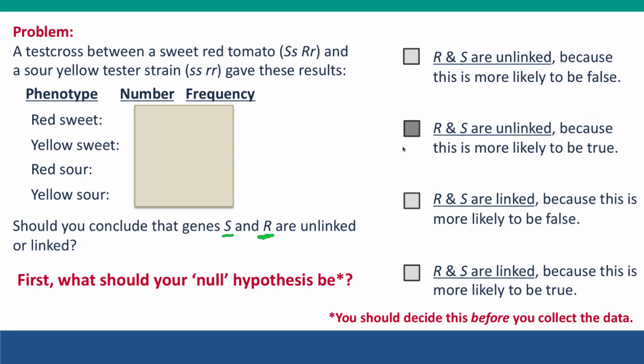The answer is that your null hypothesis should be that the two genes are unlinked, because this is the explanation that's more likely to be true a priori before you do the experiment. Any two randomly chosen genes are more likely to be on different chromosomes than on the same chromosome, so they're more likely to be unlinked. You should choose this as your null hypothesis to test.